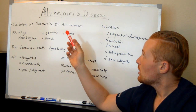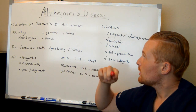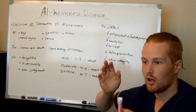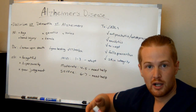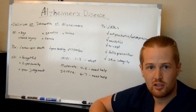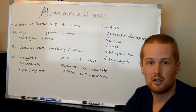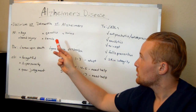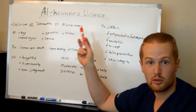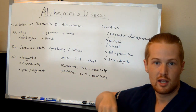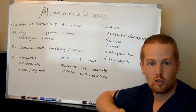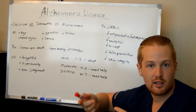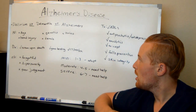Alzheimer's has no definitive diagnosis besides a brain biopsy after death, because you're not going to be doing brain biopsies on a living patient. However, there is gene testing — since genetics can play a role, there's a specific gene they can find in the DNA that shows the person is at risk for developing Alzheimer's, and if they find that, it can help confirm the diagnosis.